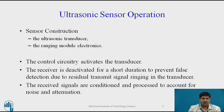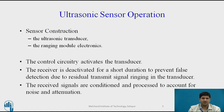The received signals are conditioned and processed to account for noise and attenuation. Every signal that returns carries some electromagnetic noise, so all good ultrasonic sensors include signal processing to eliminate that noise and give the most accurate reading possible. I want to reiterate that the onboard control circuitry clearly defines the sensor — when checking specifications, give the control circuit specifications as much importance as the transducer specifications.